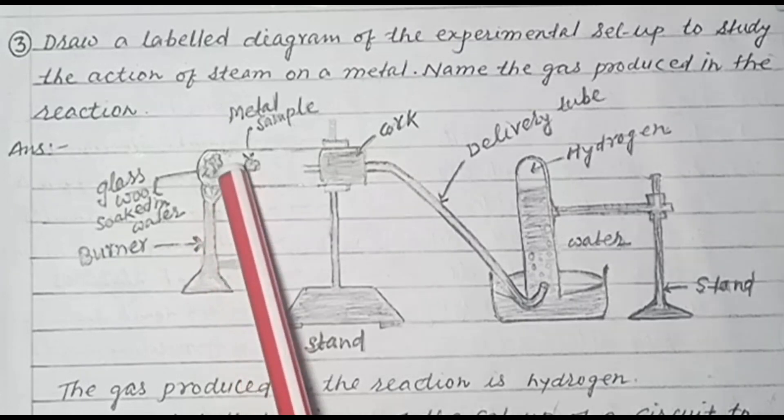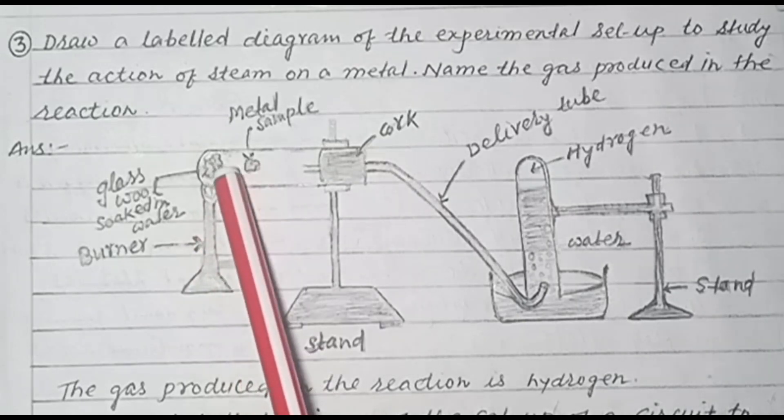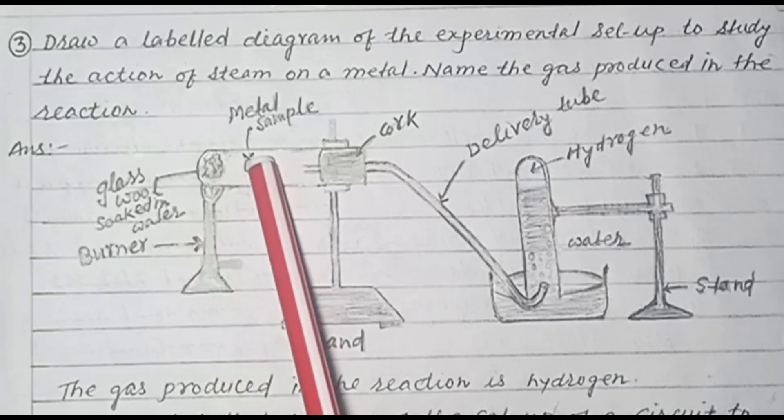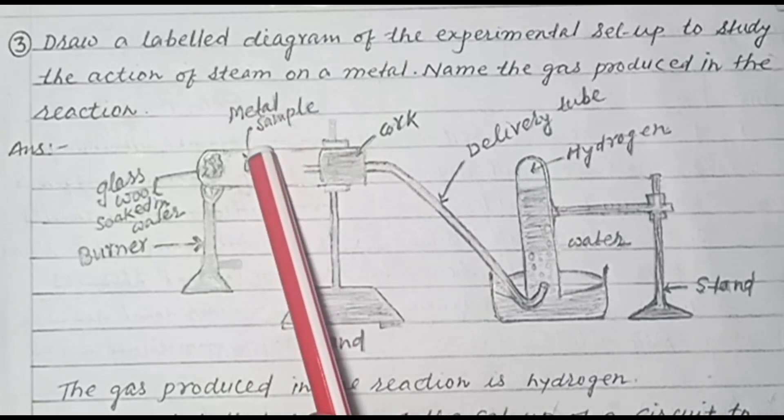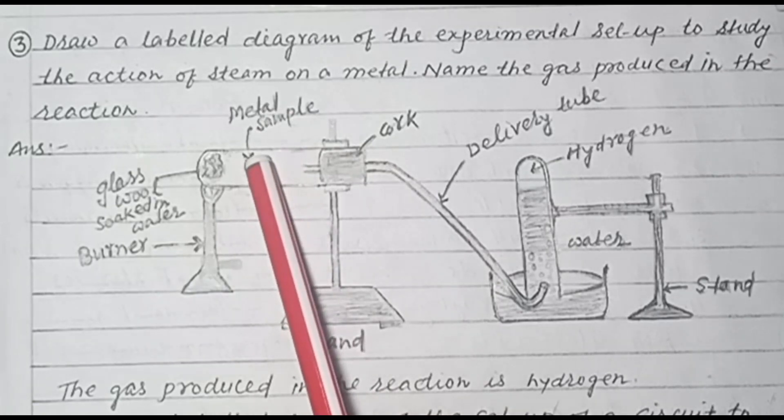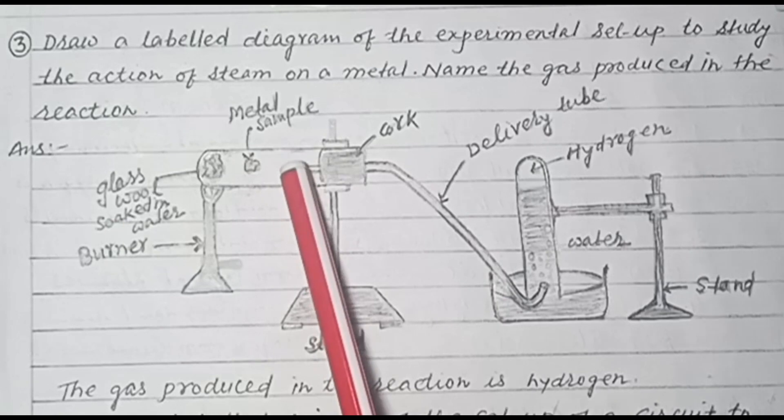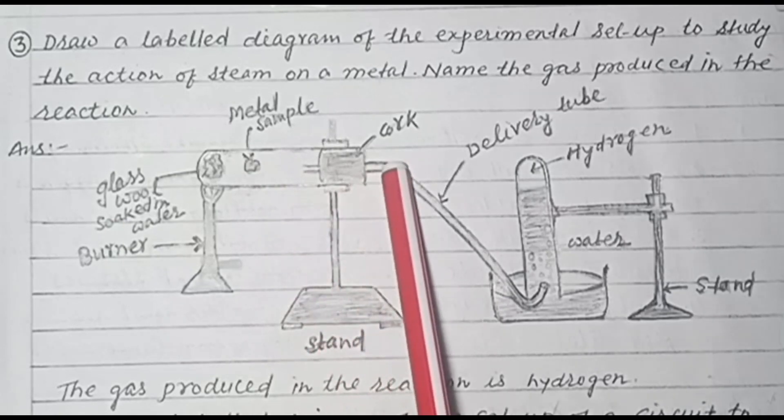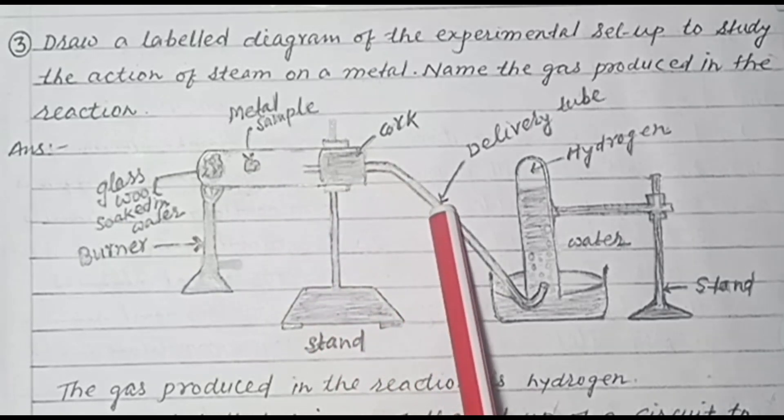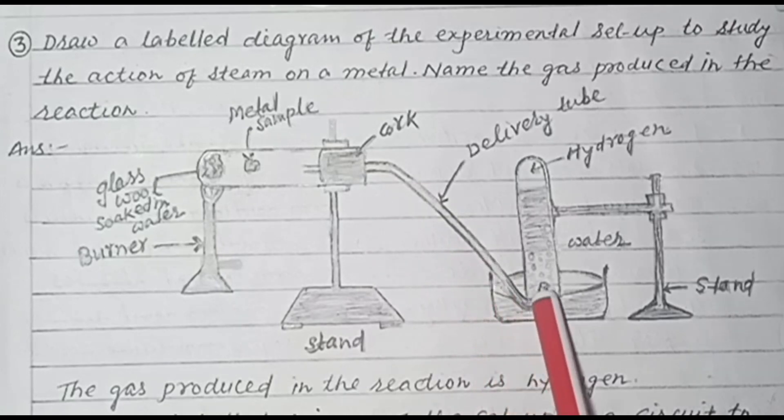This steam then passes over the hot metal and produces hydrogen. The evolved hydrogen gas is collected in the jar by downward displacement of water.